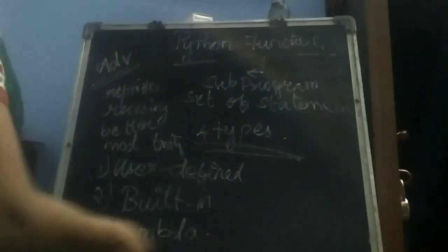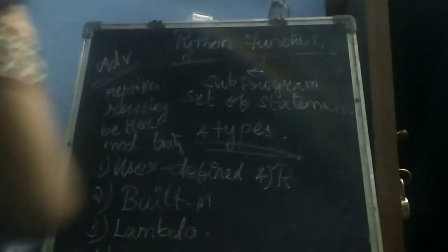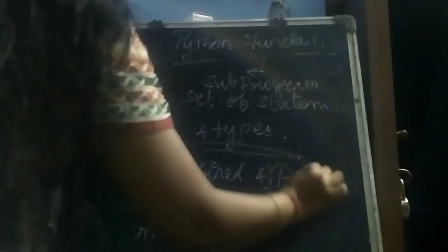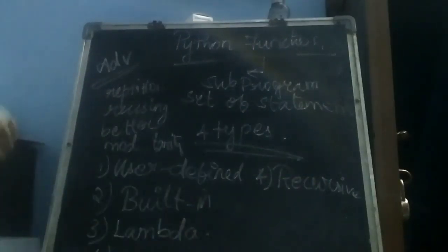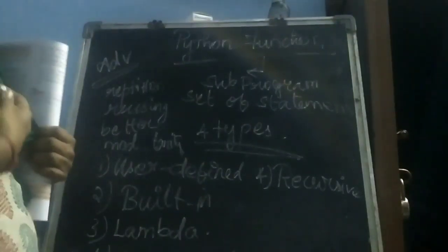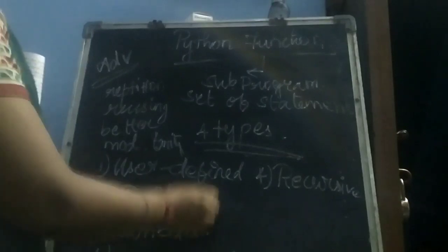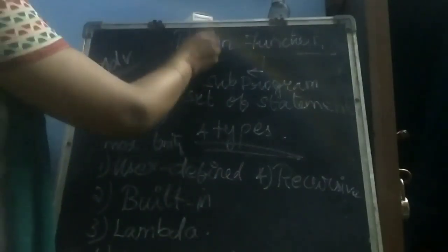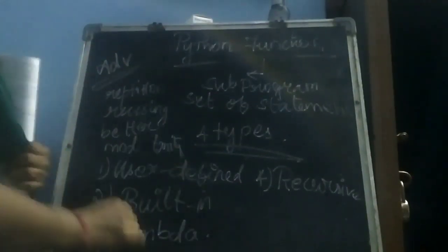We shall see lambda functions later. The last type is a recursive function. A recursive function is one where this function calls itself — that is known as a recursive function.